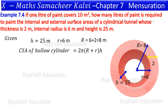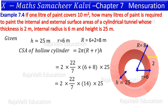Now we have the CSA value. The formula is 2π into (capital R + small r) into h, where capital R is the external radius and small r is the internal radius. Substituting the values and simplifying, we get 2,200 meters square. This is the CSA of the hollow cylinder.